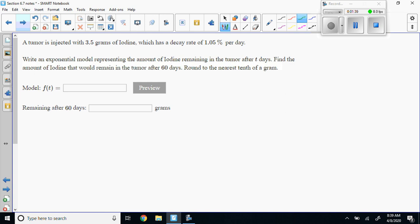First we have to write an equation. The equation that we're going to use is a times b raised to the t. The rate as a decimal would be 0.0105. Since it's decaying, the base is equal to 1 minus r, so the base equals 1 minus 0.0105, which is 0.9895.